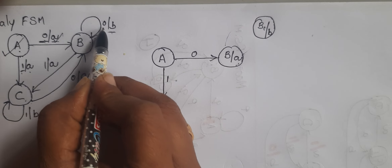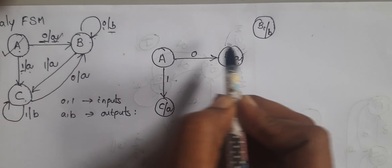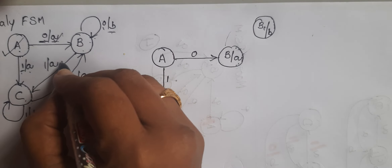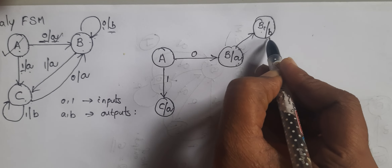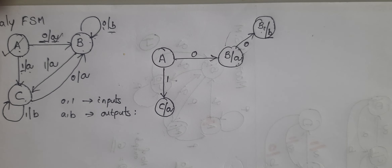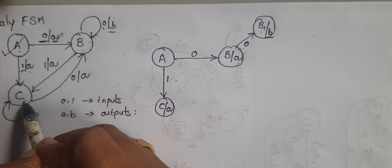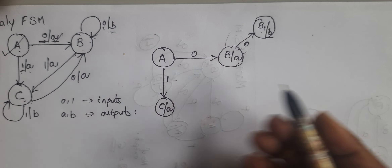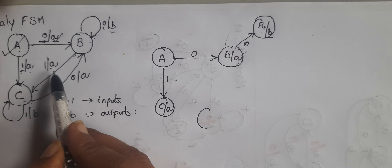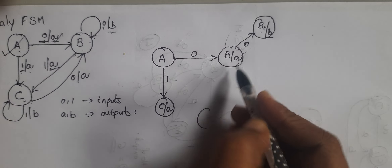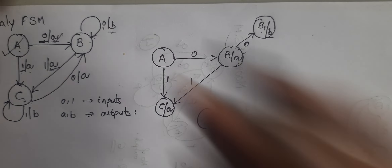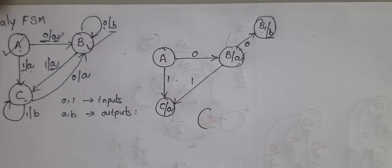For state b, when the input is 0, it remains in the same state, that is b with output b. For input 1, it goes to state c with output a. So here the output is the same, so directly draw the line. The b section is completed.